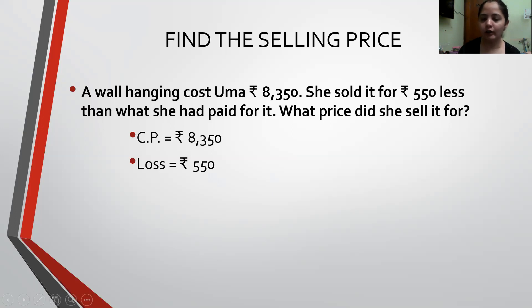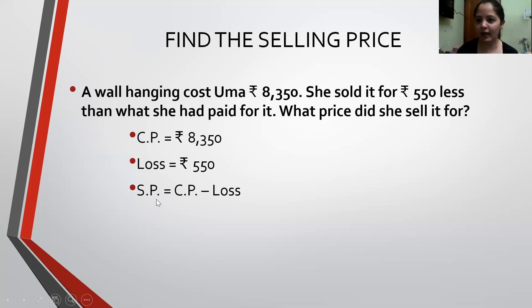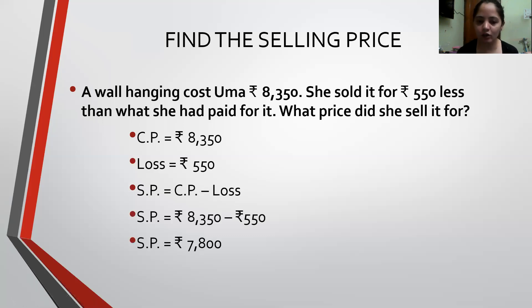What price did she sell it for? It is a Loss, which means Selling Price is less than the Cost Price. Cost Price is the bigger amount, and to find a smaller amount I subtract. So I find my Selling Price by subtracting: Selling Price equals Cost Price minus Loss — 8,350 minus 550 — so my Selling Price equals Rs. 7,800.